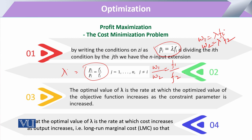Lambda is that optimal value that shows the rate at which the optimized value of the objective function increases as the constraint parameter is increased. That optimal value of lambda shows the cost rate.